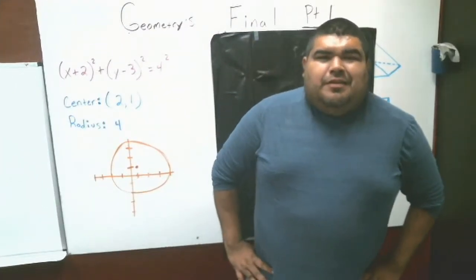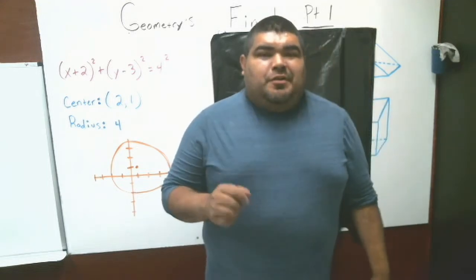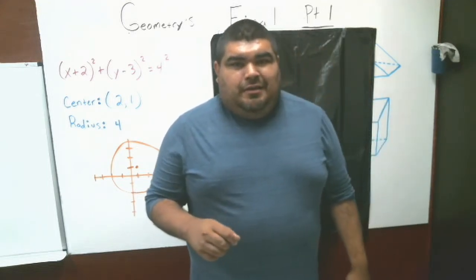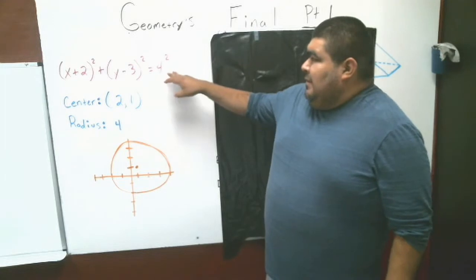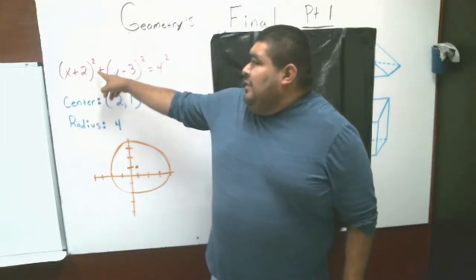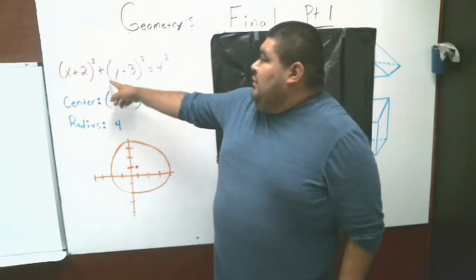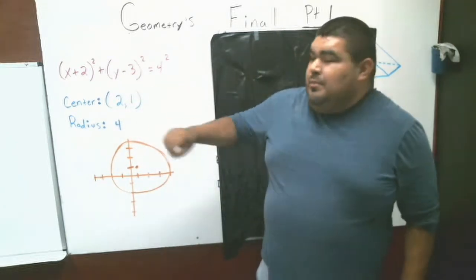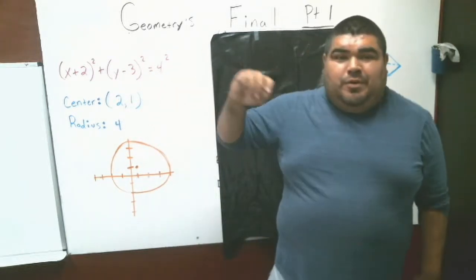Hello ladies and gentlemen, for the first part of the final notice that I have an equation up here: x plus 2 parentheses square plus y minus 3 parentheses square equals 4 square. For that first one, you guys are going to graph it. Show me how it looks once it's graphing.